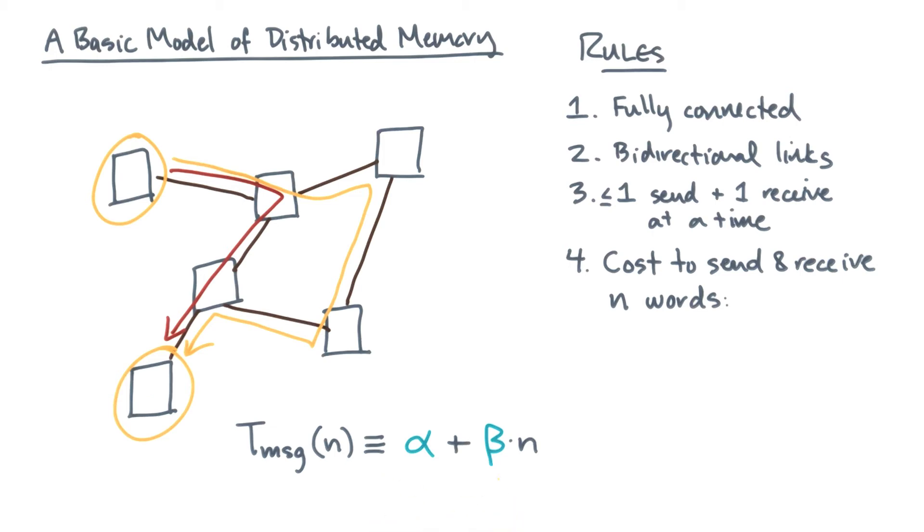Now the formula has two terms. The first term is called the latency, and it has units of time. It's a fixed cost that you pay no matter how large the message is. The second term has a parameter beta. Beta has a name, we'll call it the inverse bandwidth. It has units of time per word. You'll think a little bit more about where this cost model really comes from momentarily, so just sit tight.